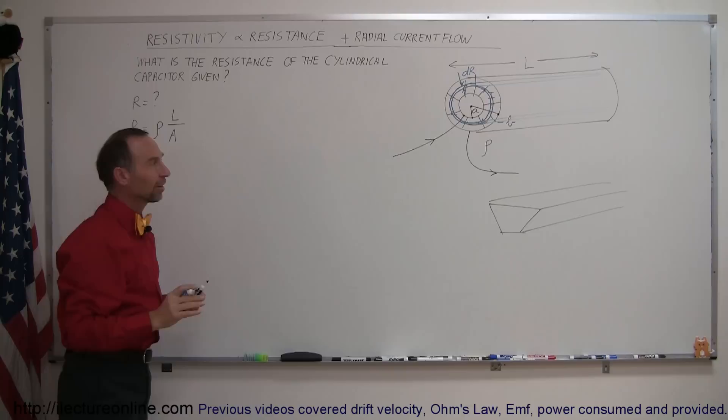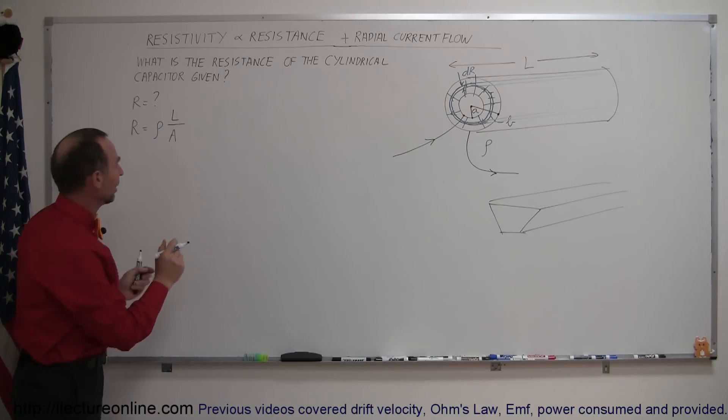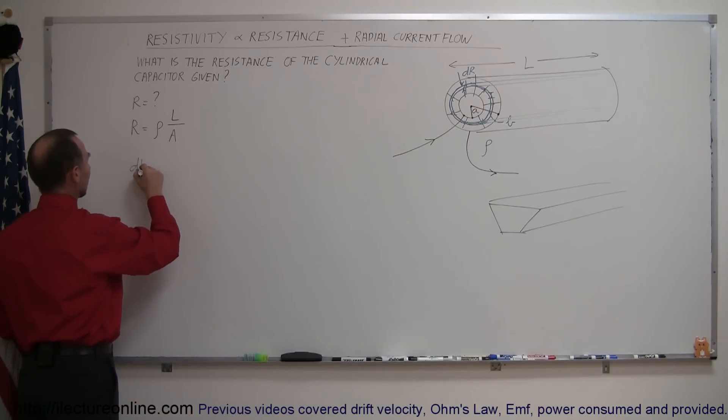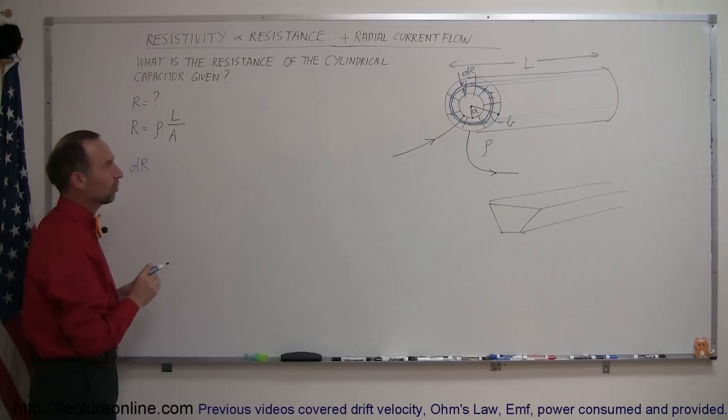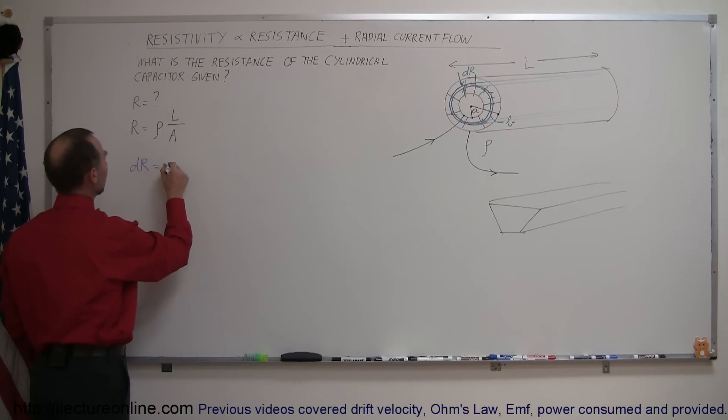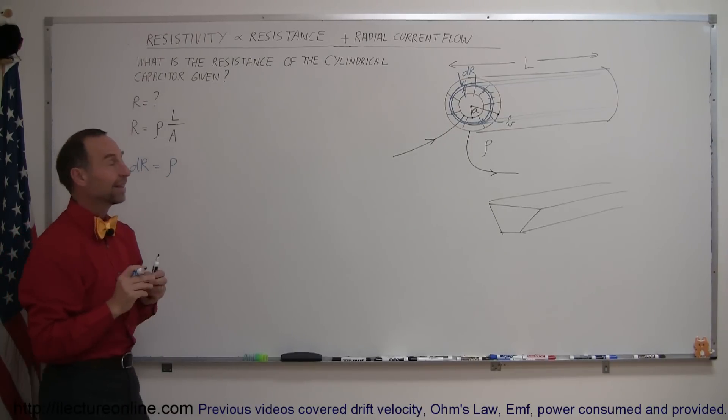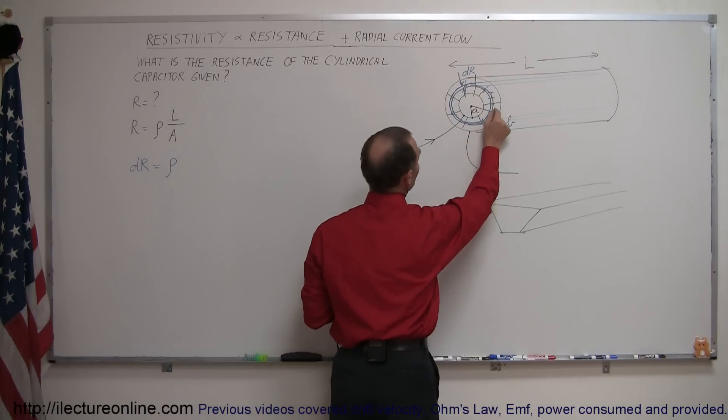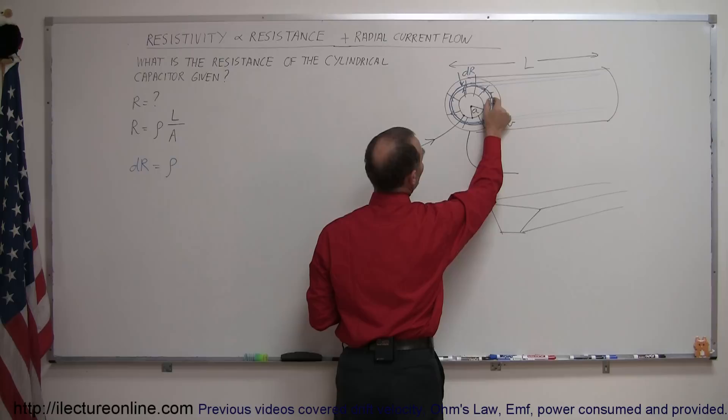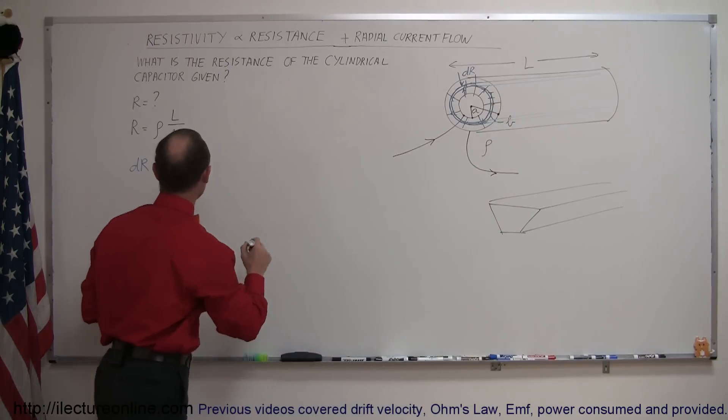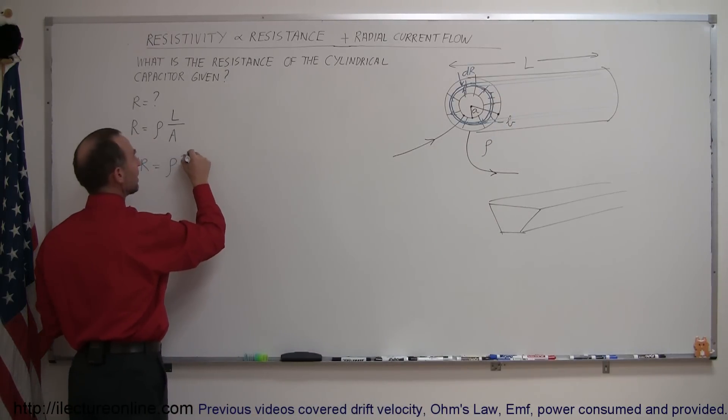And what I can say then is that the resistance of that little piece of it is a little dr, a small little portion of the resistance. And that's going to equal to the resistivity rho times the length of the travel of the current. And the length of the travel of the current would be of course that little thickness right there.